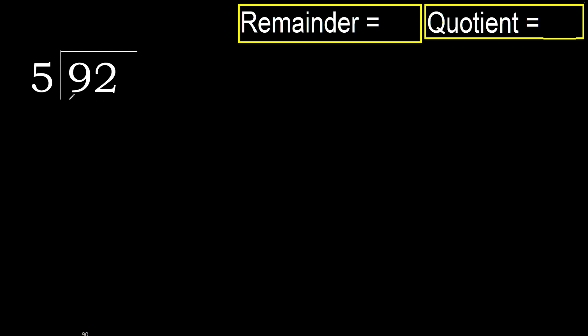92 divided by 5. 9 is not less, therefore with 9: 5 multiplied by which number is nearest to 9 but not greater? 5 multiplied by 2 is 10 — 10 is greater. Multiplied by 1 is 5 — is not greater. Ok, subtract.